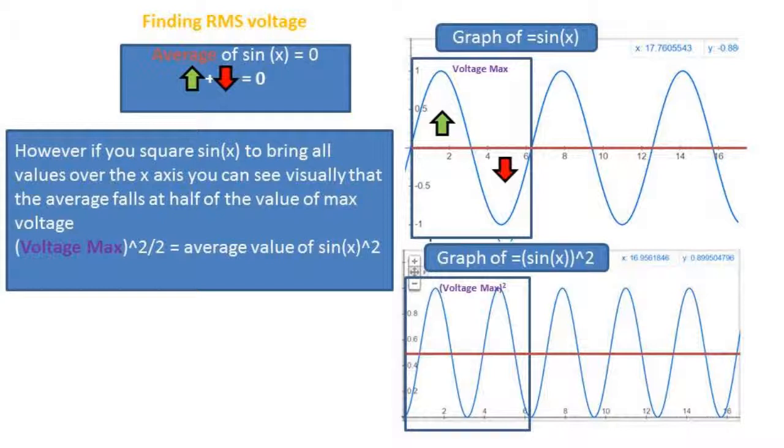Now if we squared the sine wave, all values will be above the x-axis. If you look at the graph of sine(x) squared, you can see visually that half of the value of voltage max squared will give you the average value of this function. So voltage max squared over 2 equals the average value of sine(x) squared.